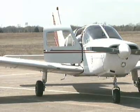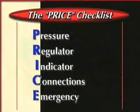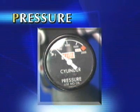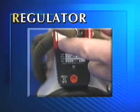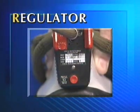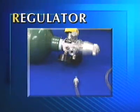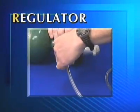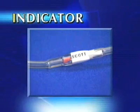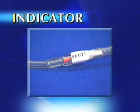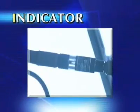Prior to every flight, you should perform the PRICE check — a checklist that helps pilots and crew members inspect oxygen equipment. Pressure: ensure that there is enough oxygen pressure and quantity to complete the flight. Regulator: inspect the oxygen regulator for proper function; if using a continuous flow system, make sure the outlet assembly and plug-in coupling are compatible. Indicator: most oxygen delivery systems indicate oxygen flow through the use of flow indicators, which may be located on the regulator or within the oxygen delivery tube. Check the flow indicator whenever the oxygen mask is donned to assure a steady flow of oxygen.